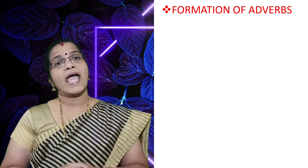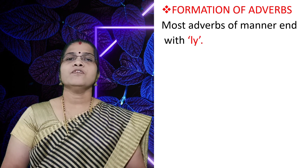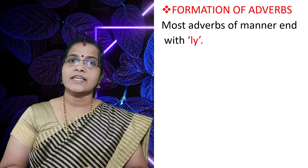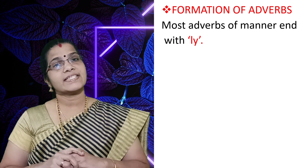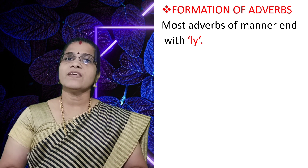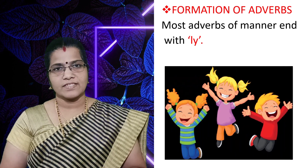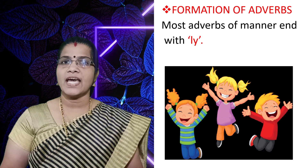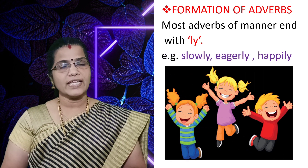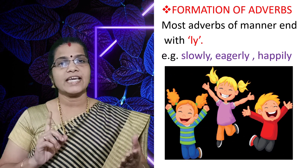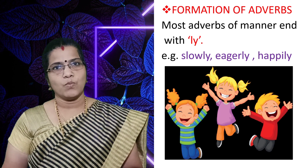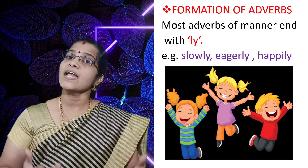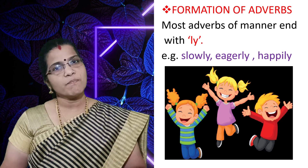Let's now see how we form adverbs. Adverbs are generally formed using -ly as a suffix. Normally we add it with adjectives. So we have, for example, slowly, eagerly, happily. There are many words that end with -ly and all these words are adverbs of manner.